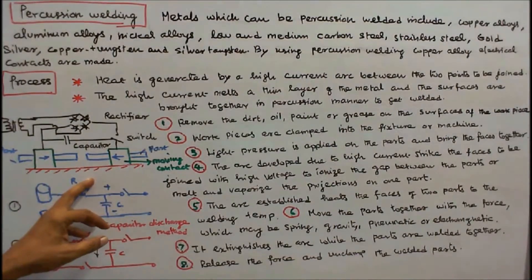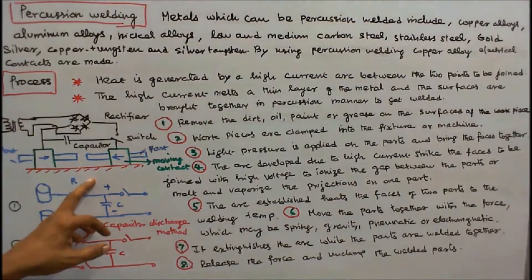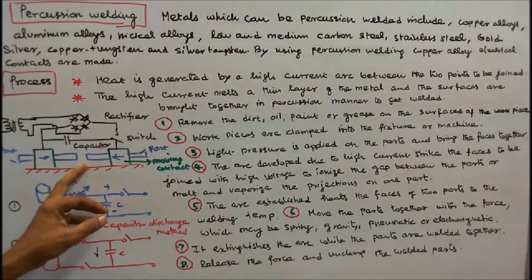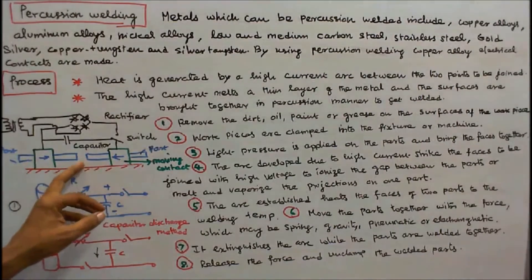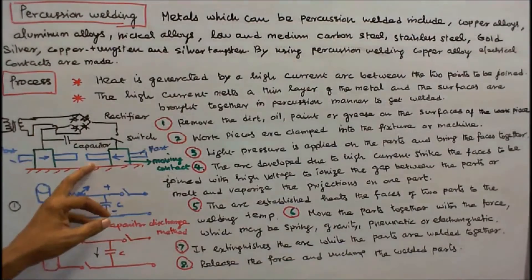Number four: the arc developed due to high current strikes the faces to be joined with the high voltage to ionize the gap between the parts or melt and vaporize the projection on one part.